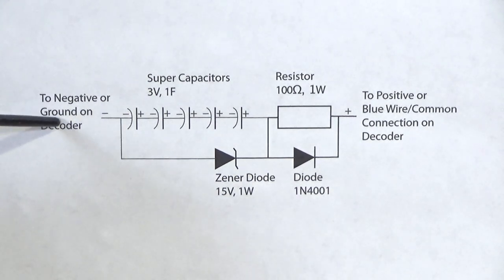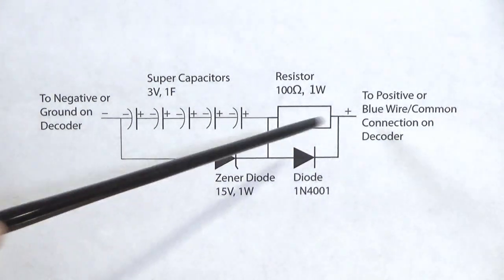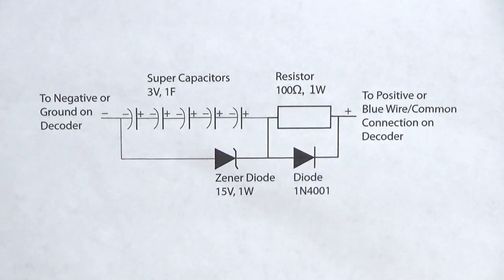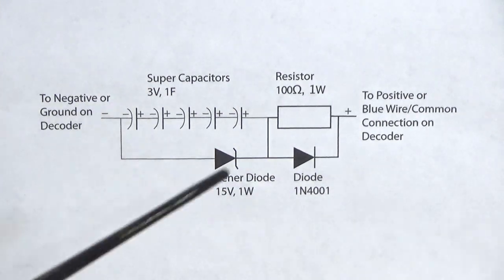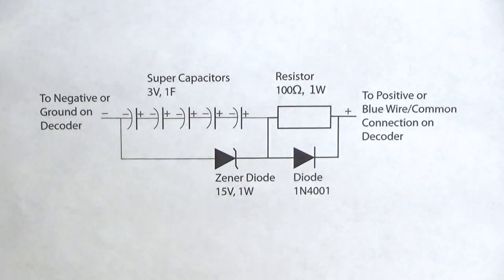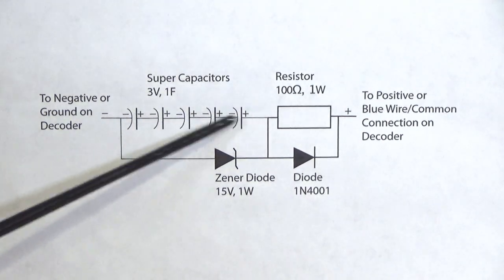First, let's take a look at how they work. We have the negative end here that's connected to a ground or a negative connection on the decoder. Some decoders it's actually provided as a black wire or black with white stripes. The positive wire to complete the circuit is your blue wire or the common connection for your functions on the decoder. I'll show you that in more detail for various decoders in the next video. These devices we have shown here, five capacitors in a line in series.